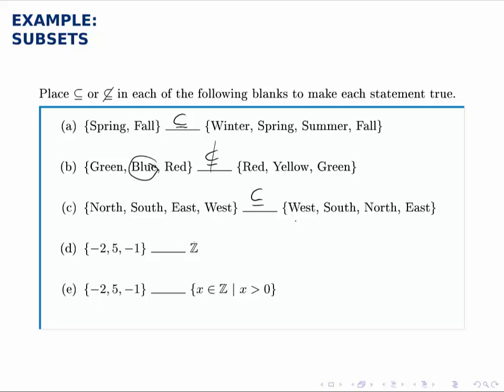In part D, all we need to know is that the set on the right is all the integers ℤ. Negative 2, 5, and negative 1 are indeed integers, so they come from the larger set of integers. They're all contained in that set, so this set is a subset of the integers.